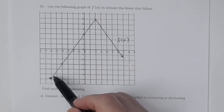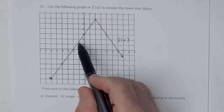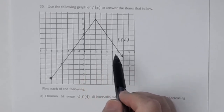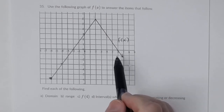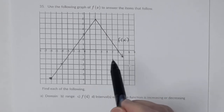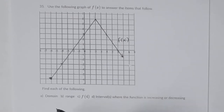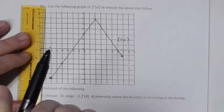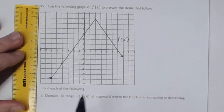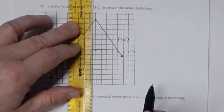Let's talk about the domain. The domain is the set of x coordinates — the x values that are on this graph. For every point on this graph you're interested in determining what those x values are. Notice on this function there's a closed circle here and an arrow here, and both of those things affect the domain as well as the range.